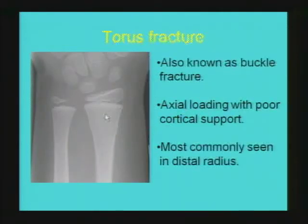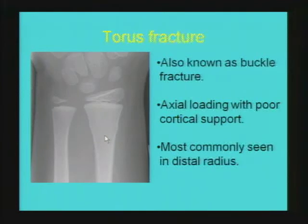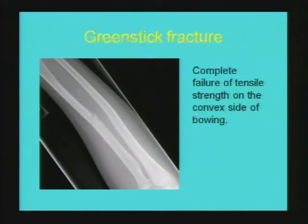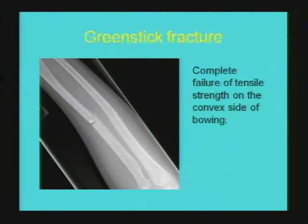A torus fracture results from axial loading on a cortex with less biomechanical strength than adult bone, resulting in buckling of the cortex perpendicular to the direction of axial load. Also known as a buckle fracture, it is most common in the distal radius, with fall on outstretched hand being the most common mechanism. A greenstick fracture is an extension of the spectrum of plastic fractures, with complete failure of tensile strength at one point, leading to fracture in one aspect of the cortex with the opposite cortex intact.